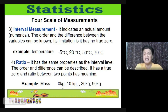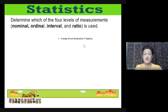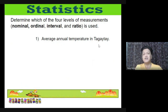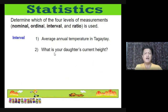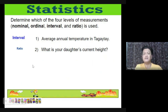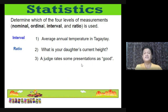Let's determine the level of measurement for these examples. (1) Average annual temperature in Tagaytay — interval, since temperature has order and differences but no true zero. (2) What is your daughter's current height — ratio, since height has a true zero and meaningful differences. (3) A judge rates some presentations as 'good' — ordinal, based on ranking.